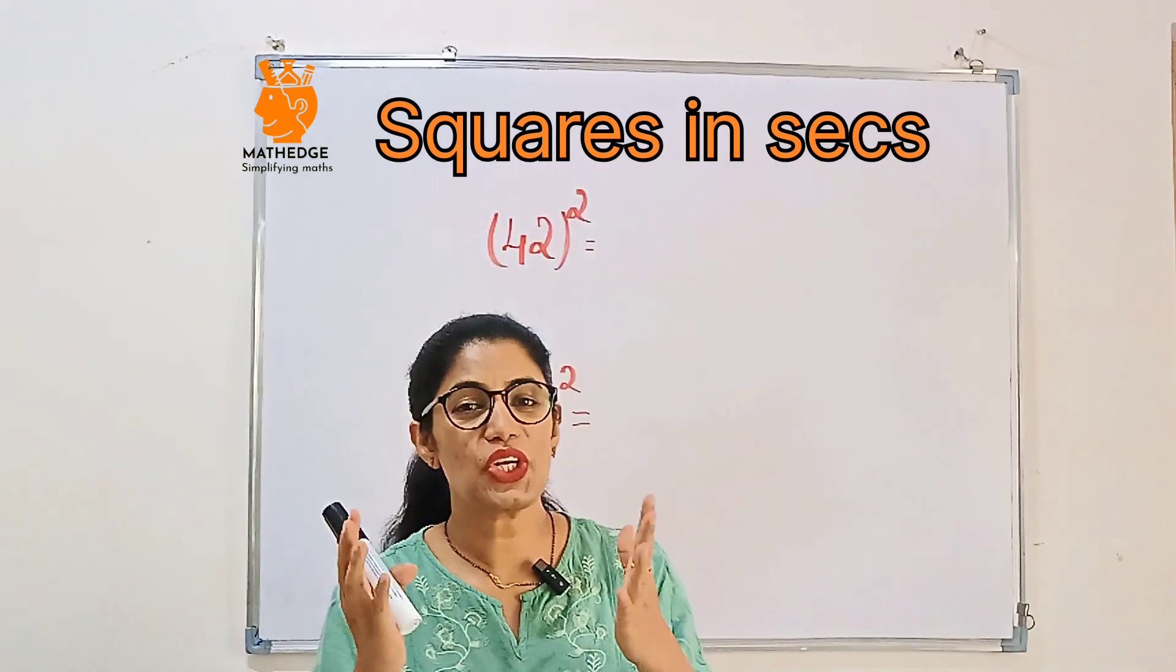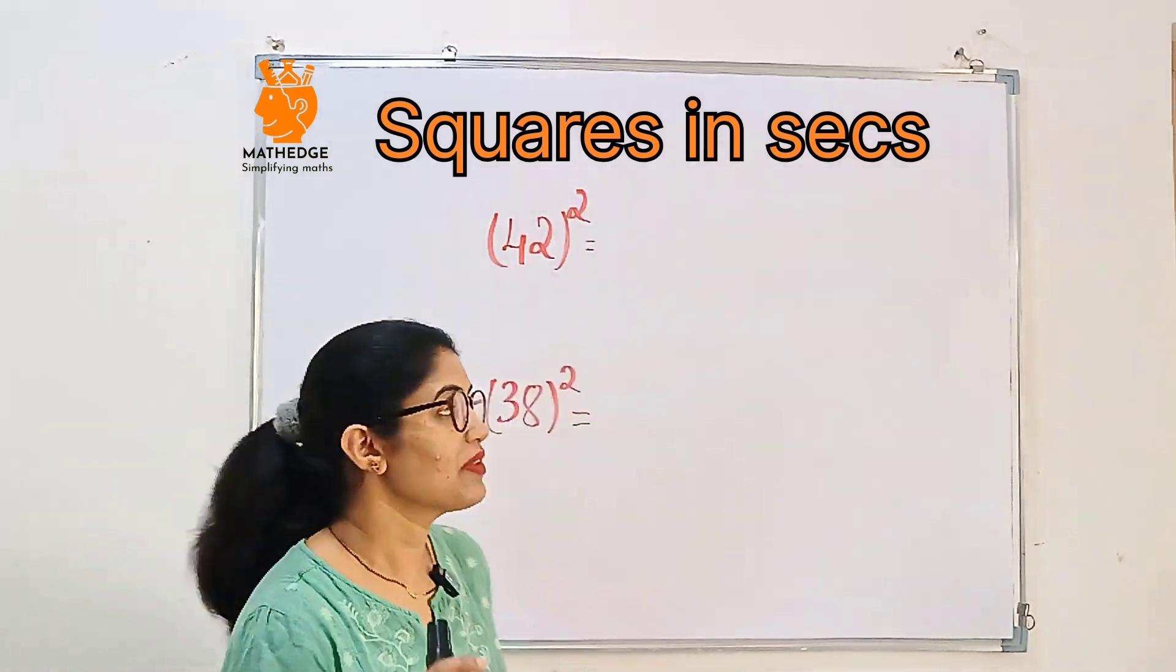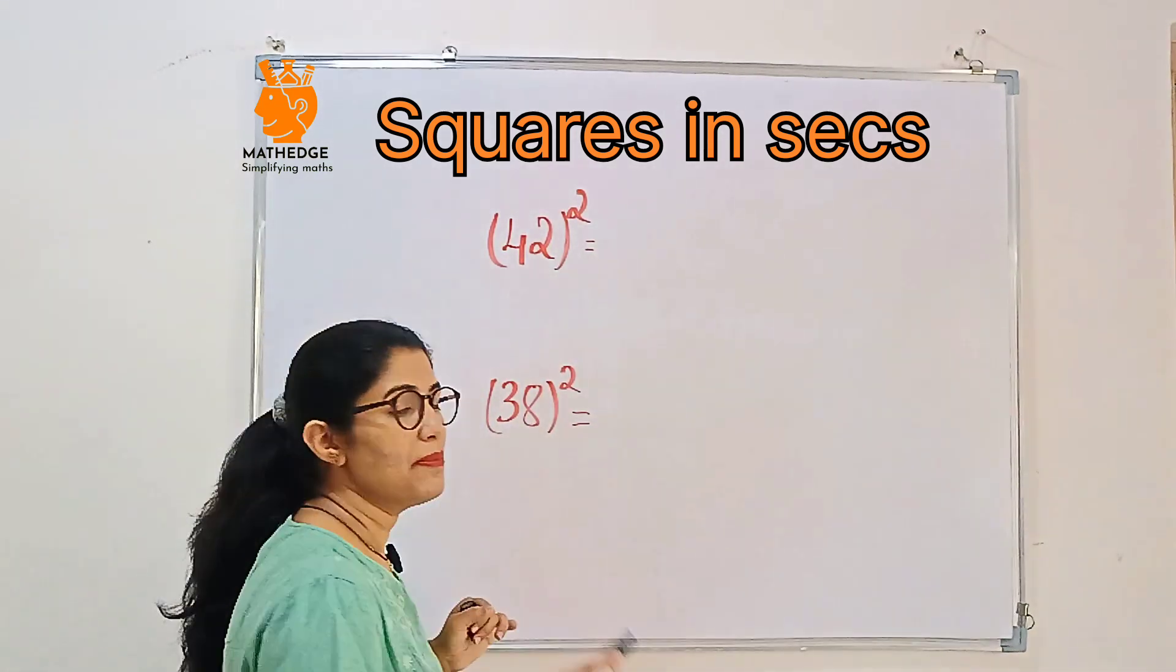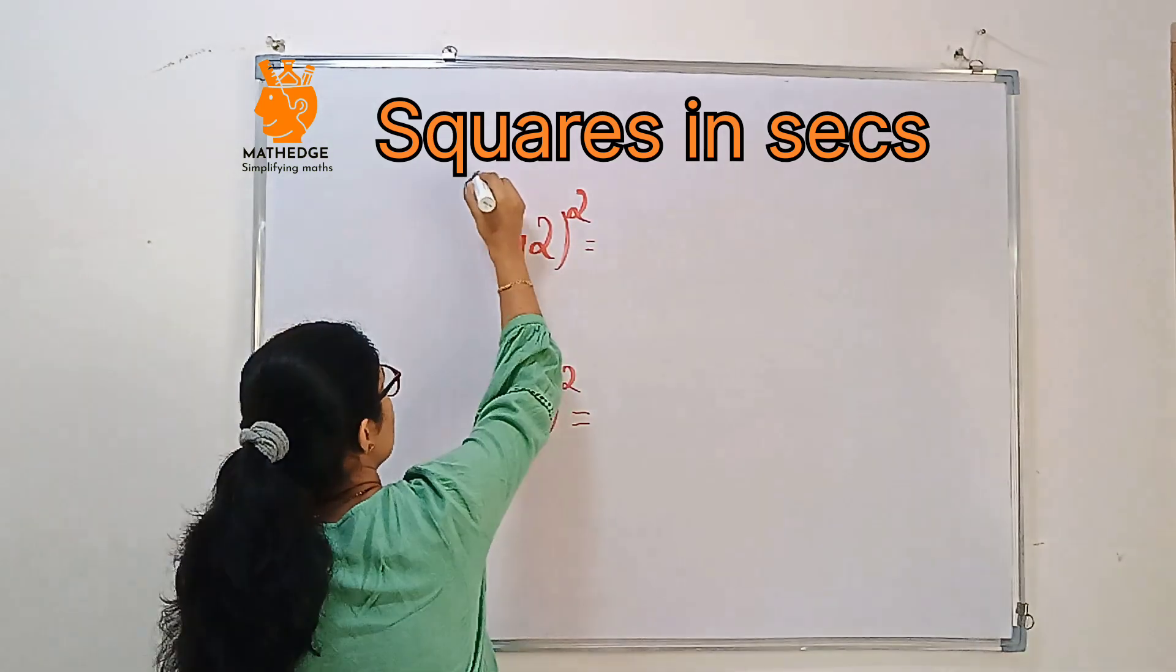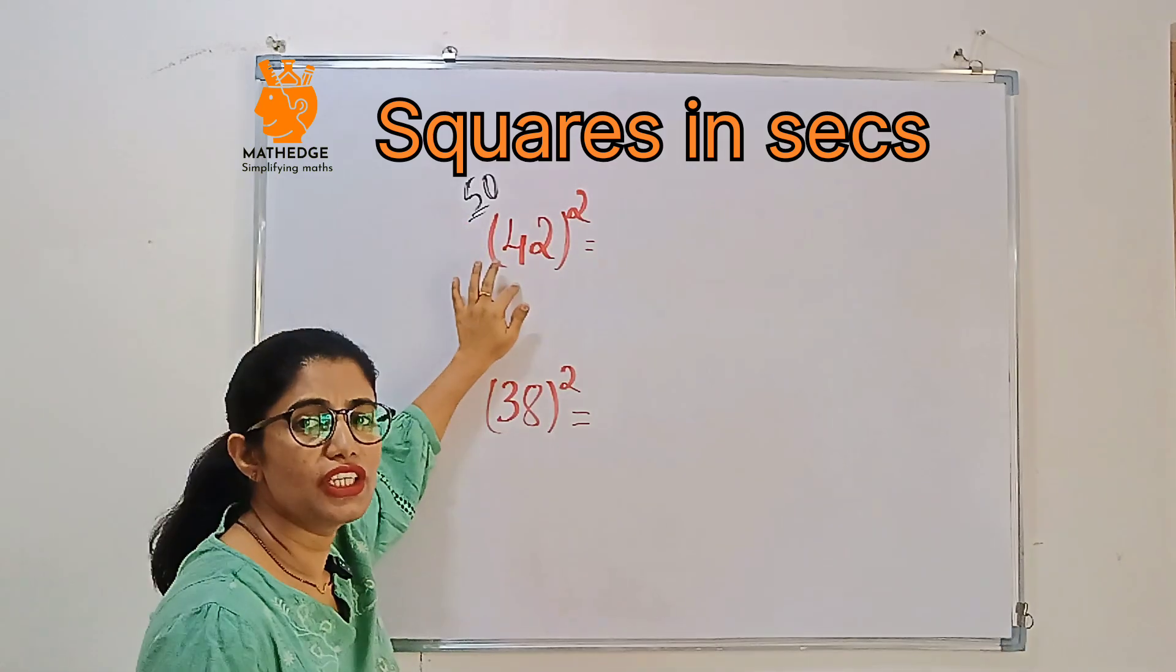Alright, for numbers close to 50, meaning less than 50, we'll use this trick. See, first we should consider base 50. So base 50, then after that, first we should figure out how far 50 is from 42.